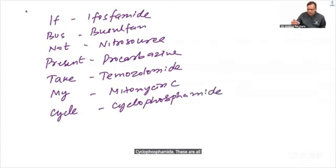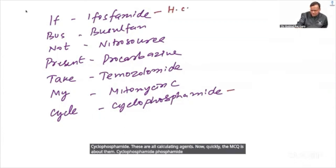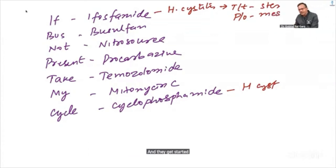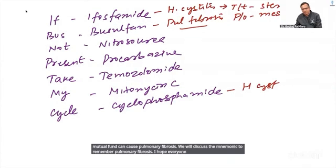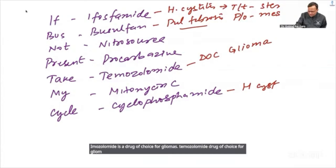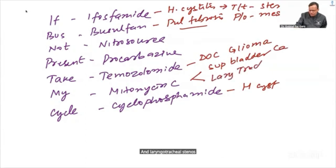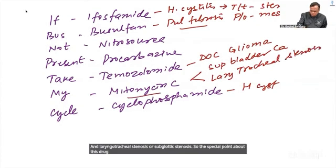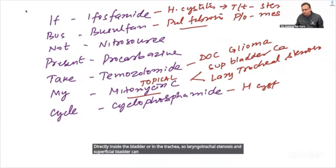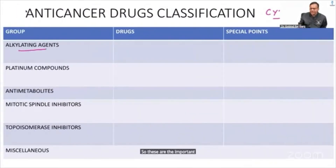Important MCQ points about alkylating agents: Cyclophosphamide and Ifosfamide cause hemorrhagic cystitis. Treatment is steroids and prophylaxis is Mesna. Busulfan can cause pulmonary fibrosis. Temozolomide is the drug of choice for gliomas. Mitomycin C is used topically for superficial bladder cancer and laryngotracheal stenosis, similar to BCG.